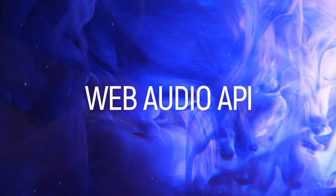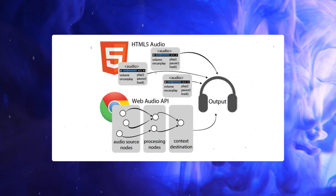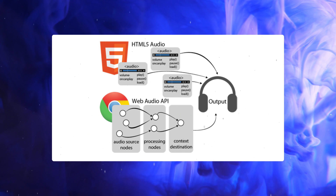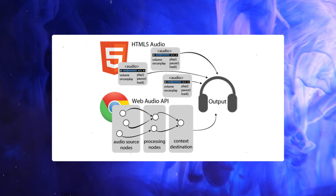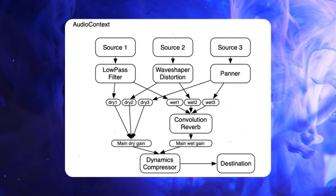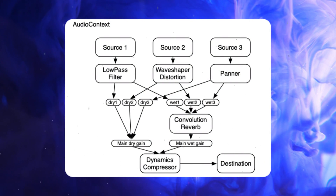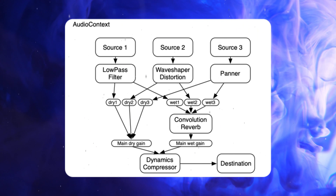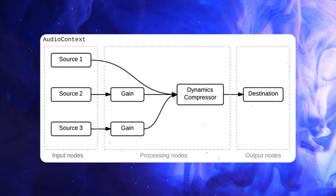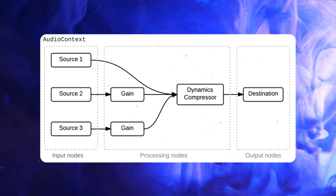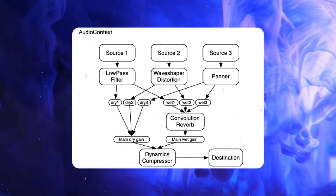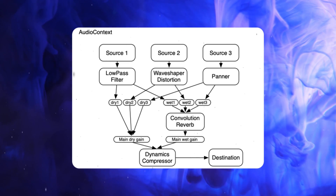Before getting started, let's understand what is written by the Web Audio API. The Web Audio API involves handling audio operations inside an audio context and has been designed to allow modular routing. Basic audio operations are performed with audio nodes linked together to form an audio routing graph. Several sources with different types of channel layouts are supported, even within a single context. This modular design provides the flexibility to create complex audio functions with dynamic effects.